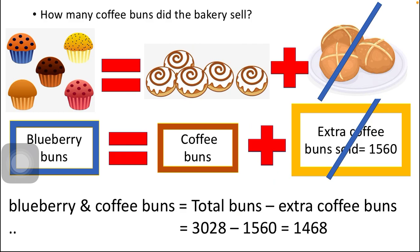The third statement — how many coffee buns did the bakery sell — is what we need to find. Since blueberry buns are not equal to coffee buns because there are 1560 extra coffee buns, we need to make the blueberry buns equal to coffee buns by removing those extra coffee buns.